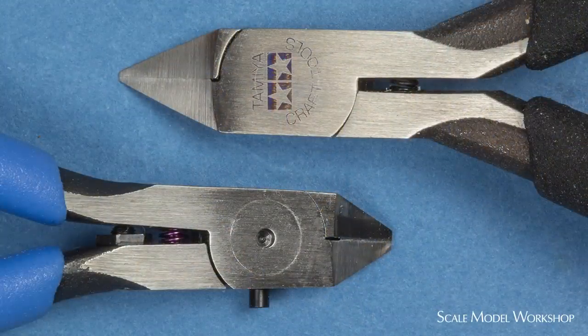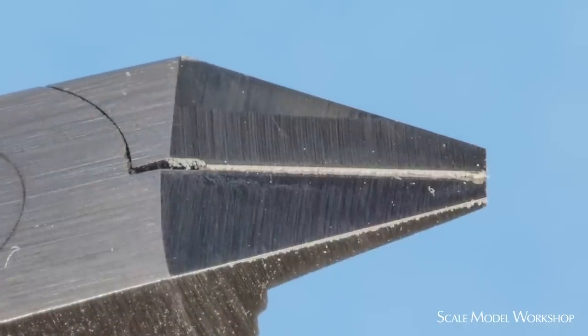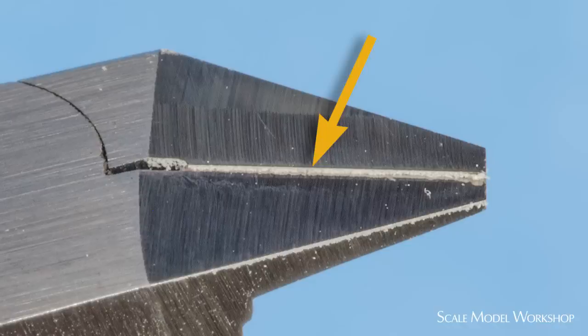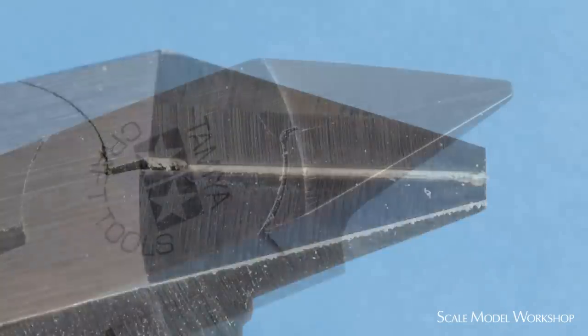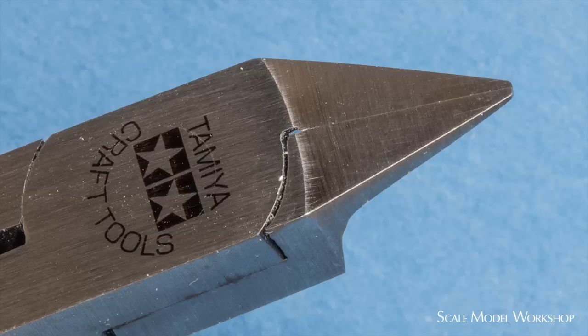Comparing the God Hand SPN-120 with the Tamiya 74123, you can see that the non-cutting safe jaw of the God Hand protrudes a little. So if you cut by seating both edges against the part, you'll get a slight angled cut with an excess of material left at the safe edge. On the other hand, the jaws of the Tamiya 74123 are perfectly flush, with a slight curve from side to side.